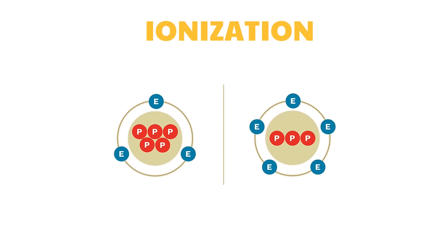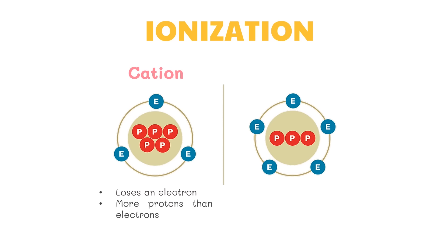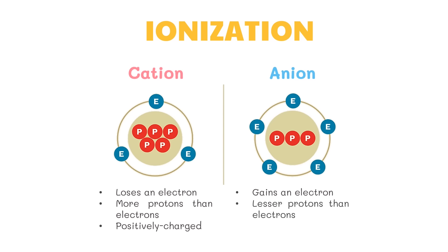A positive ion is called a cation. When an atom loses an electron to another atom, there is an imbalance in the number of protons and electrons; the number of protons becomes greater than the number of electrons, and the atom becomes positively charged. A negative ion is called an anion. When an atom gains an electron given up by another atom, the number of protons is less than the number of electrons, and the atom becomes negatively charged. An atom that gains extra electrons will have the same mass number and atomic number as the ion formed.